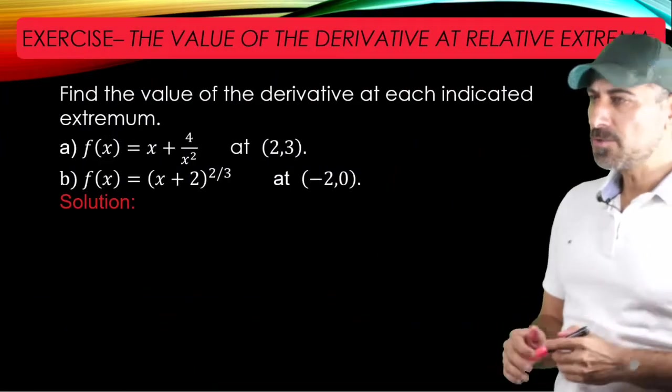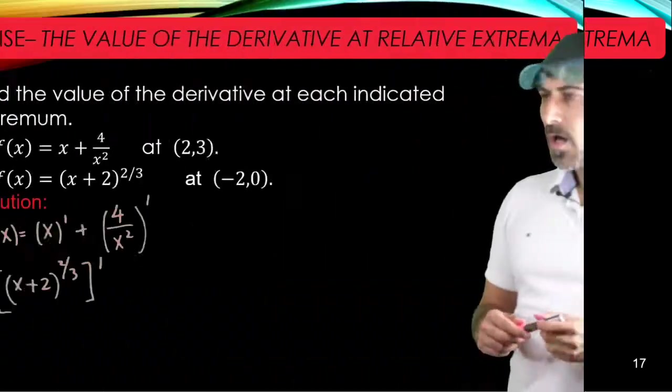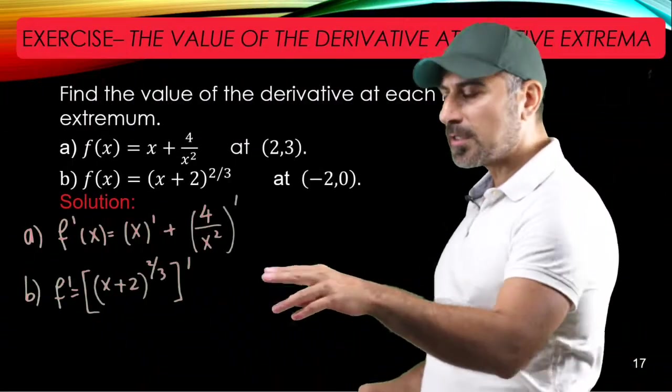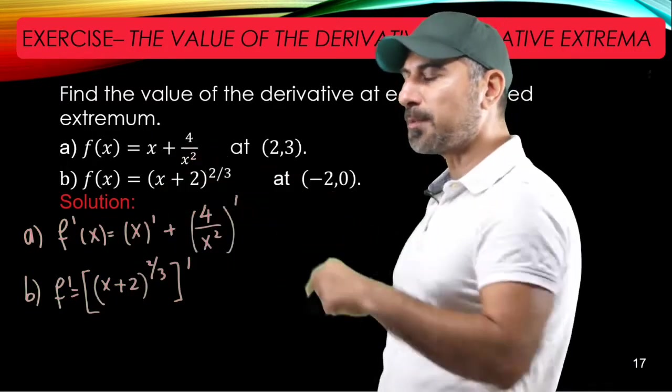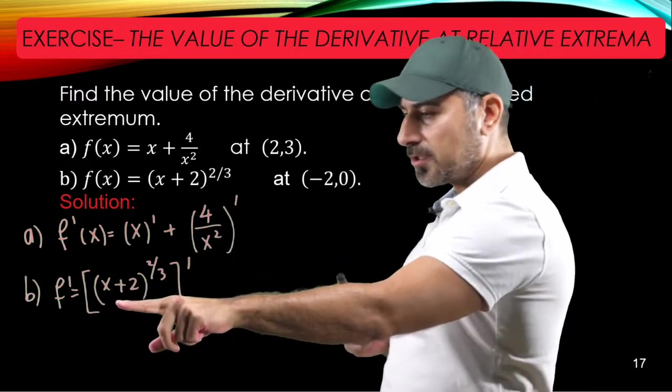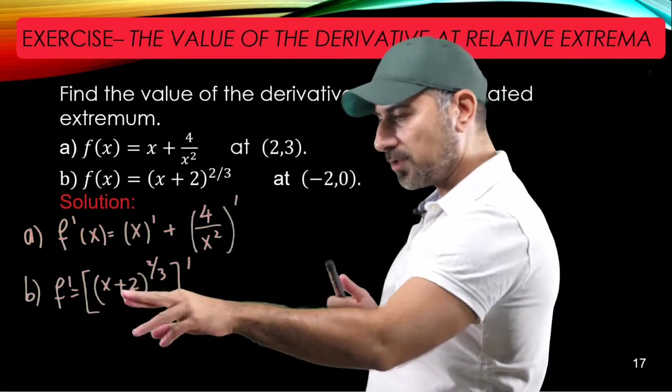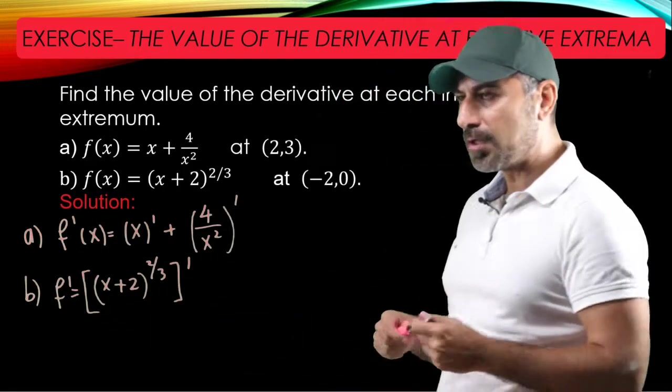So why don't we go ahead and hit the road by finding the derivatives of each function simultaneously. We'll write down the derivative of the first function to be the derivative of the first piece plus the derivative of the second piece, and for this one we're going to use the chain rule because we have the inner function x plus 2, and the outer function is taking the power of 2 thirds.